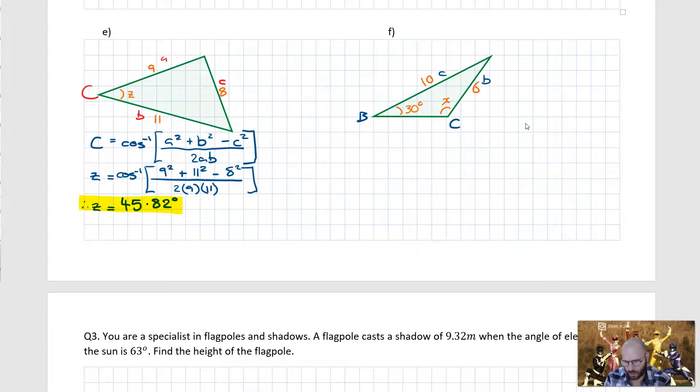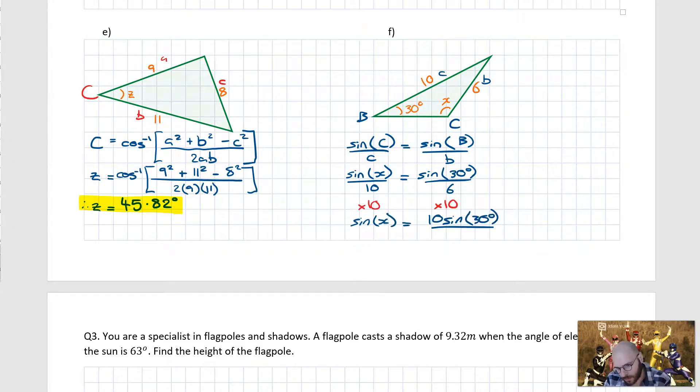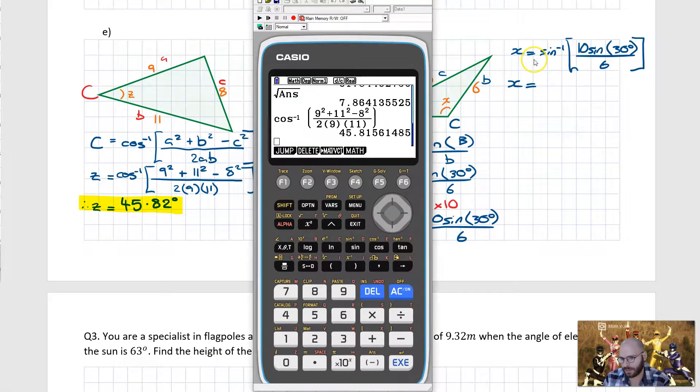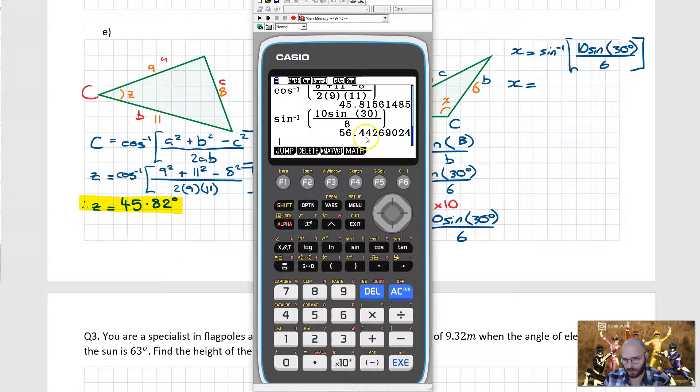Writing this form out, we're going to get sine c over little c is equal to sine b over little b. Subbing in the values, we get sine x over 10, then sine b which will be 30 degrees over 6. Rearranging, we deduced that our value of X is the inverse sine of 10 sine 30 over 6. Putting that in the calculator comes out to be 56.44 degrees.